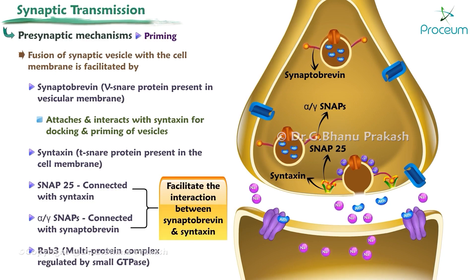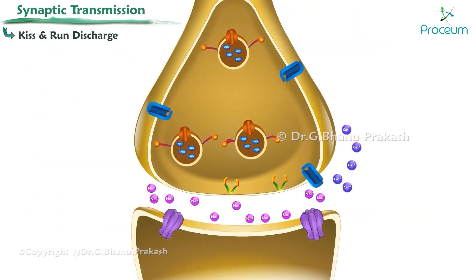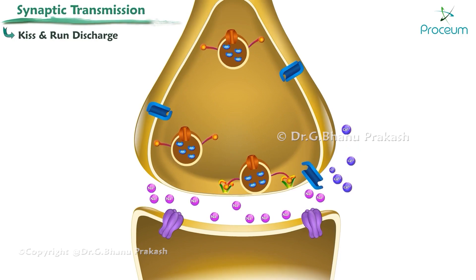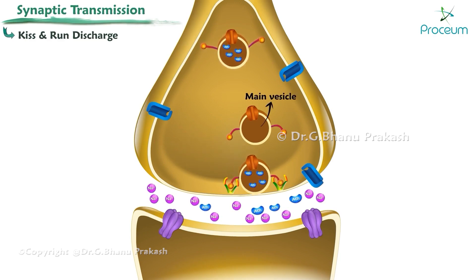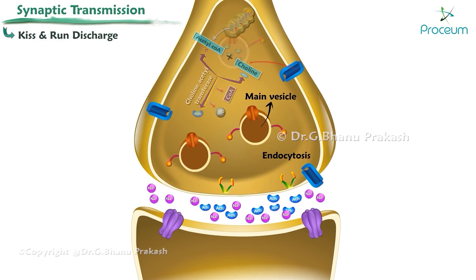Kiss-and-run discharge: discharge of synaptic vesicular contents takes place through a small hole in the cell membrane, which immediately closes rapidly. In this process, the main vesicle remains inside the cell — this is called kiss-and-run discharge. Following discharge, some vesicles are quickly recovered by endocytosis and refilled locally, in which the endocytic process is short-circuited.